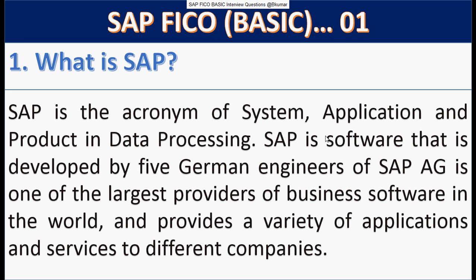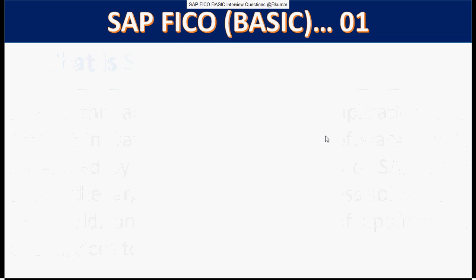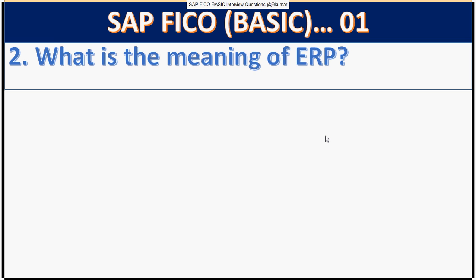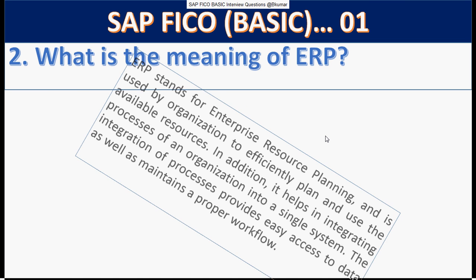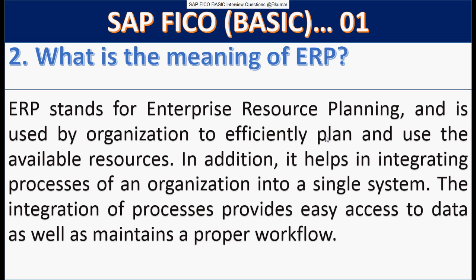and Product in Data Processing. SAP is software that is developed by five German engineers of SAP AG. It is one of the largest providers of business software in the world and provides a variety of applications and services to different companies. Next: what is the meaning of ERP? ERP stands for Enterprise Resource Planning and is used by organizations to